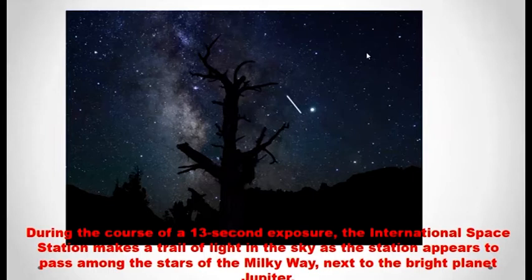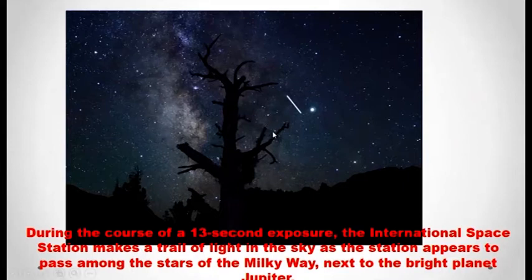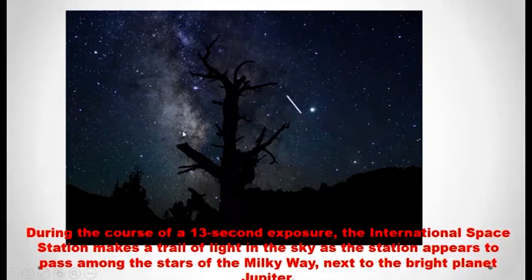Coming to this image, it was taken during the course of a 13-second exposure. At the time, the International Space Station makes a trail of light in the sky as the station appears to pass among the stars of the Milky Way galaxy. This tube-light-like object is our International Space Station. You can see the Jupiter planet next to that International Space Station. This space station is moving along with the stars in our Milky Way galaxy — a beautiful image obtained by a telescope from Earth.